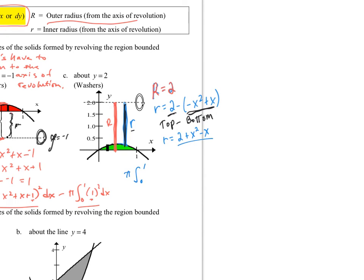And I'm going to have pi r squared, the big r. Big r is just two. So that's two squared dx minus pi r squared. I got the little r. So I'm going to section that off. Two plus x squared minus x quantity squared dx. There you go. That's how you set that one up.